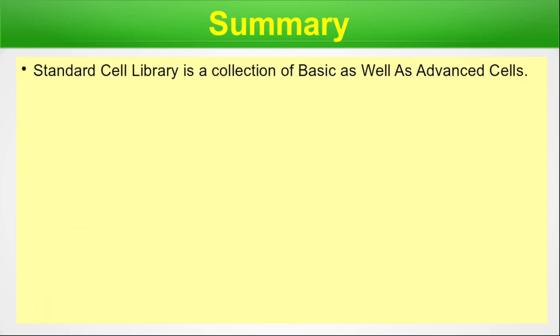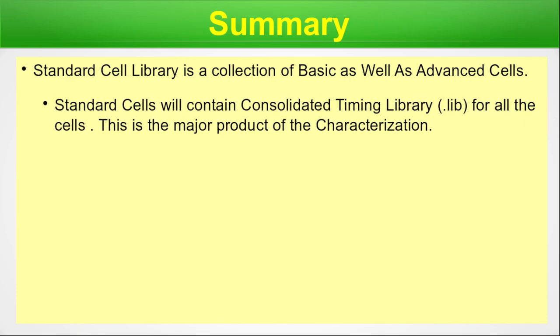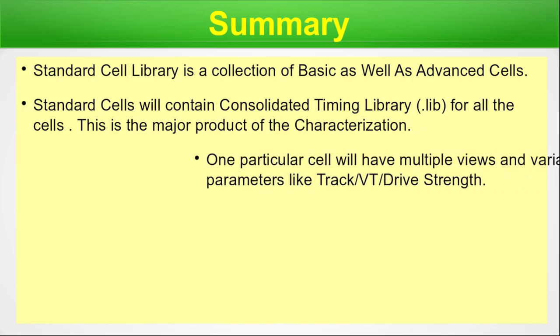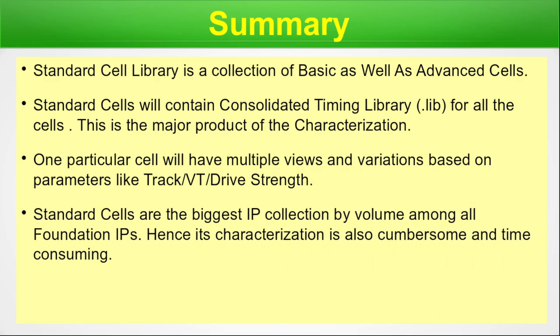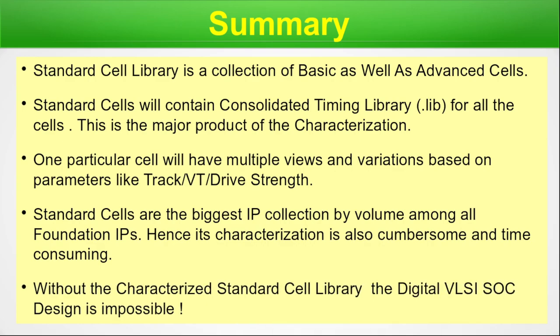Summary. The standard cell library is a collection of basic as well as advanced cells. Standard cells contain a consolidated timing library (.lib) for all cells — this is the major product of characterization. One particular cell will have multiple views and variations based on parameters like track, VT, drive strength, etc. Standard cells are the biggest IP collection by volume among all foundation IPs, hence their characterization is also cumbersome and time-consuming. Without a characterized standard cell library, digital VLSI SOC design is impossible.